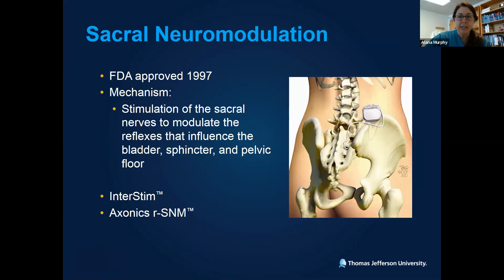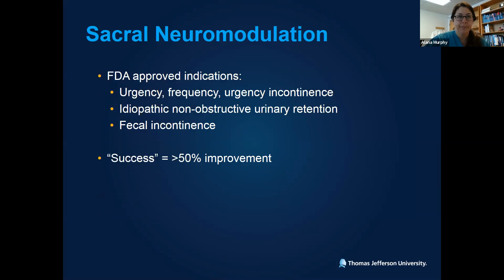Let's switch to sacral neuromodulation — also not a new therapy, first approved by the FDA in 1997. The mechanism is neuromodulation of the sacral nerves that go to the bladder, sphincter, and pelvic floor muscles, though the exact mechanism is not fully understood. We have two systems currently available in the US: Interstim and the more recently approved Axonics system. FDA-approved indications include urgency, frequency, and urgency incontinence — overactive bladder symptoms — as well as idiopathic non-obstructive urinary retention and fecal incontinence.